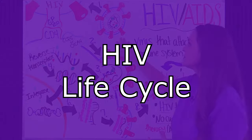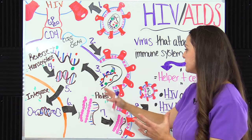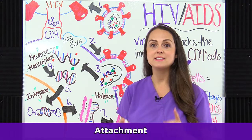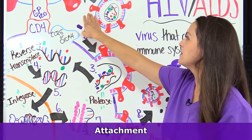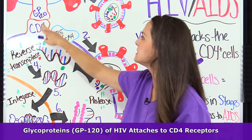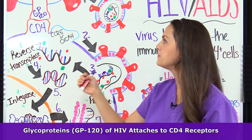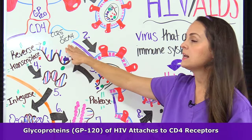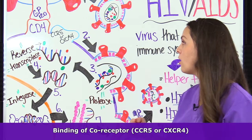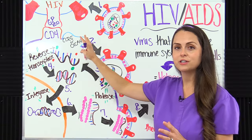Now let's look at the life cycle of HIV: how it gets inside the cell, integrates itself, starts replication, assembly, budding, and then produces new mature HIV. The first step is attachment. The glycoproteins, specifically GP120, attach to the CD4 receptor on the cell surface — here we have a helper T cell. Whenever that happens, there's also binding of a co-receptor, either CCR5 or CXCR4, and HIV has gained entry into the cell.